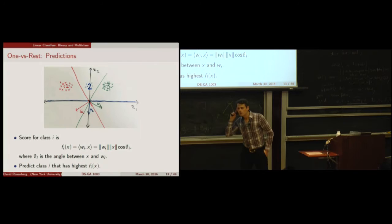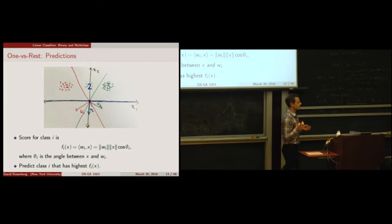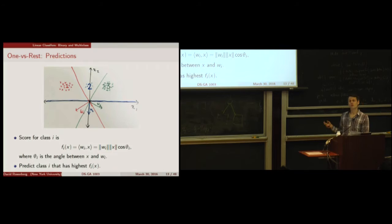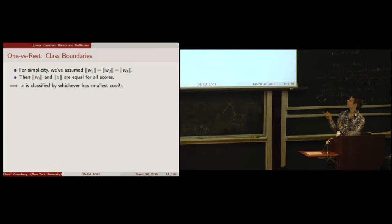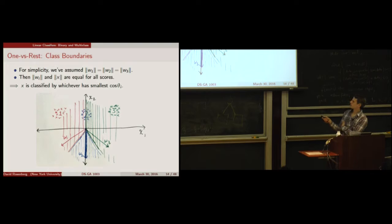Cosine of theta is maximized at theta equals zero. So we classify X by whichever WI it is closest to in angle — cosine distance. Between W1 and W2, anything closer in angle to W1 gets assigned red, and anything closer in angle to W2 is assigned blue. This breaks the plane into the different class regions by angle bisection between each of the WIs.